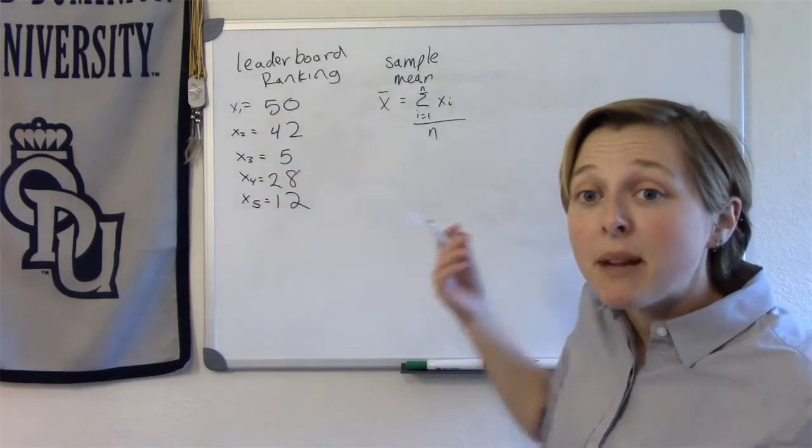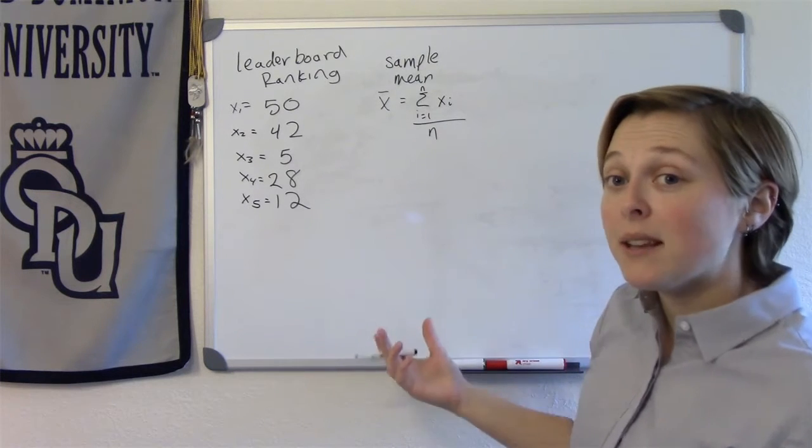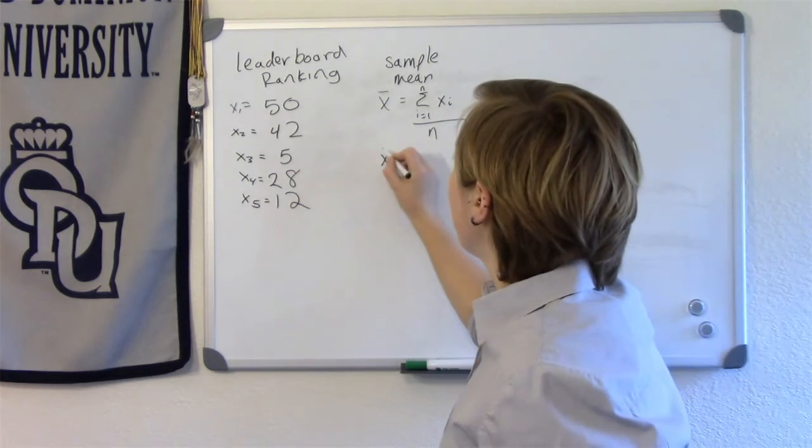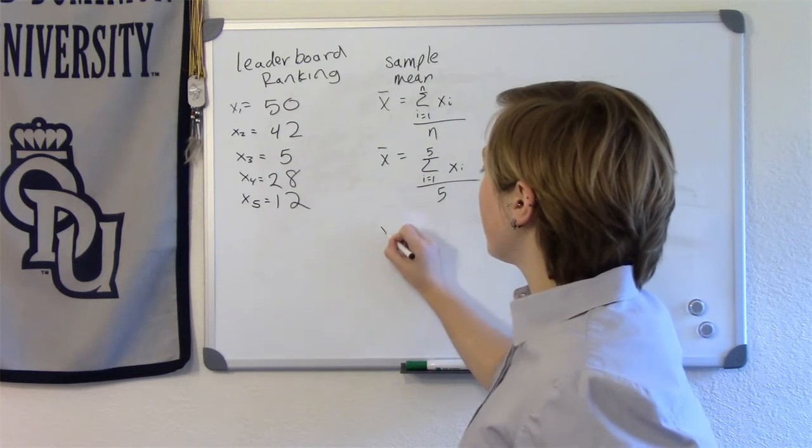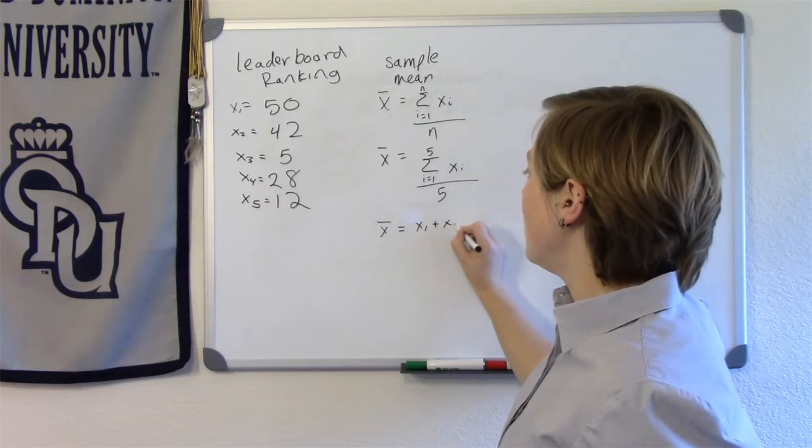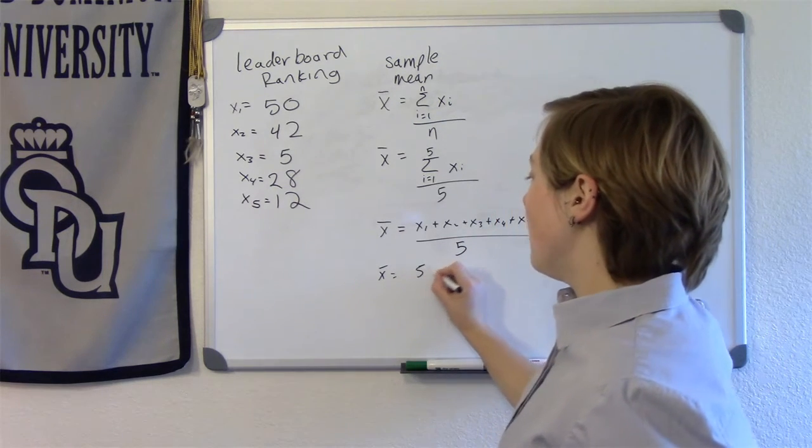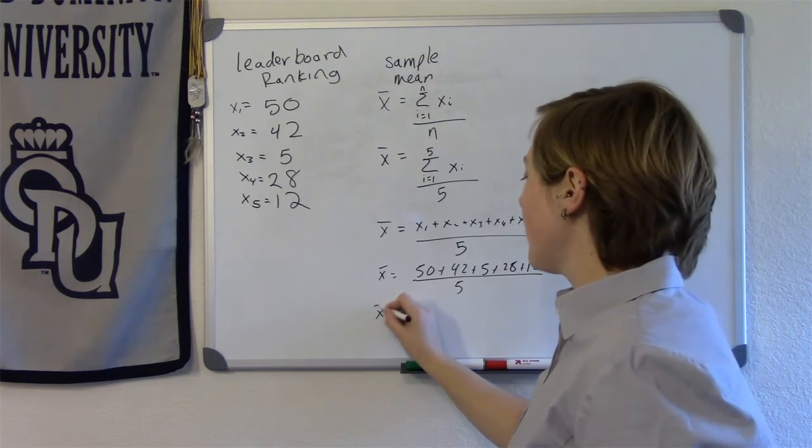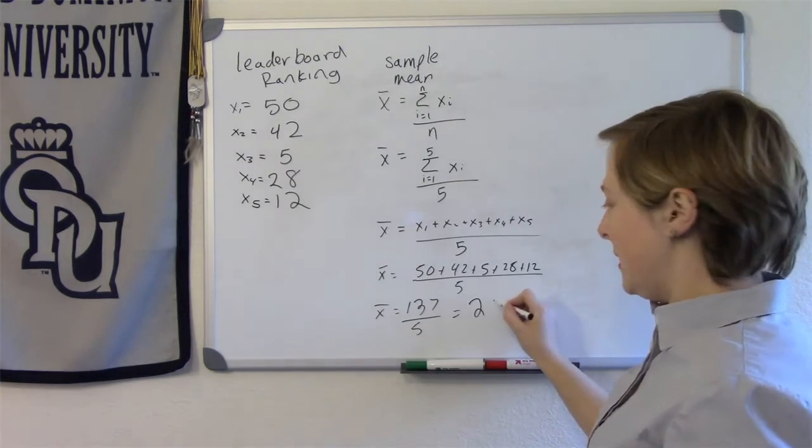We probably already know this, but this might be new notation for us. It's really important that we understand this notation in addition to understanding how to calculate it. For this particular sample, n is 5. So x bar equals 50 plus 42 plus 5 plus 28 plus 12 divided by 5. This sum adds up to 137 divided by 5, which is 27.4.